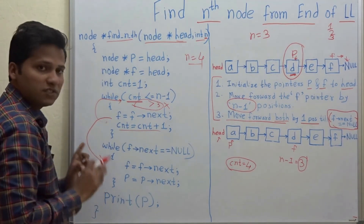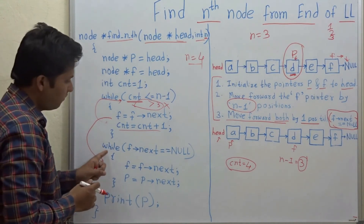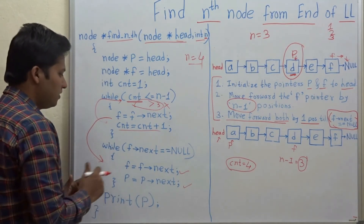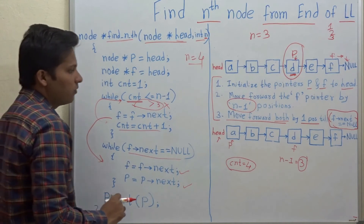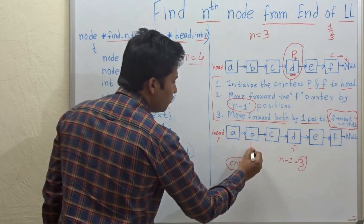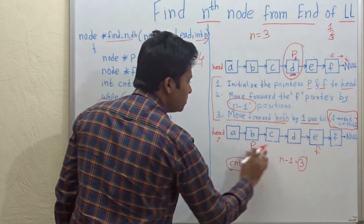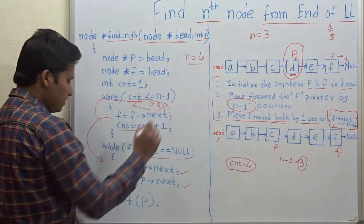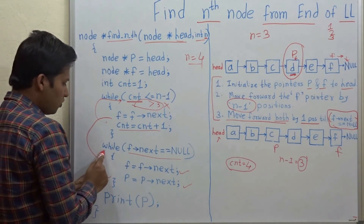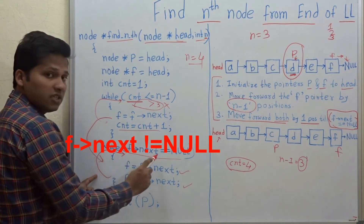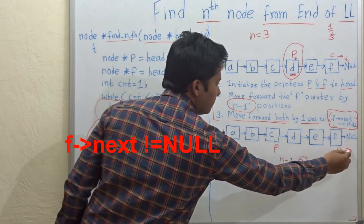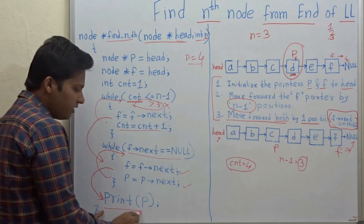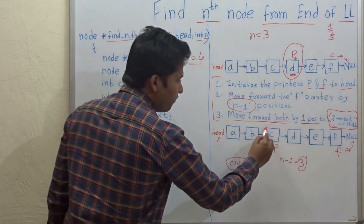After the first while loop, we move forward pointers f and p by one position each till f->next equals null. In the first iteration, p moves forward and f moves forward. In the next iteration, p moves forward and f moves forward again. In the following check, f->next equals null, so we exit the loop and print p as our answer — the nth node from the end.